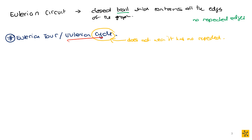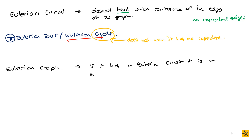Our final definition: an Eulerian graph is any graph which has an Eulerian circuit in it. So if it has an Eulerian circuit, it is an Eulerian graph. Not all graphs are going to be Eulerian, but certain graphs will always be Eulerian based on how they are constructed.